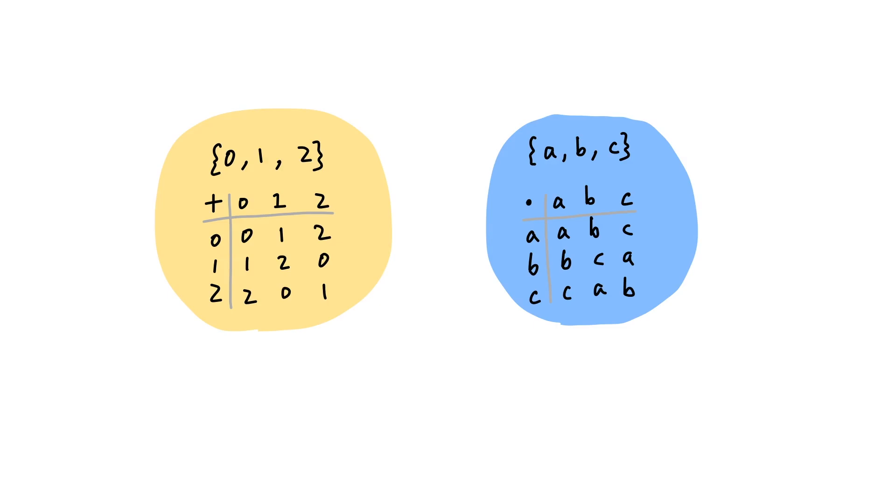Again, we don't need to know about groups or group homomorphisms to see that they're the same. The only difference is in how we name the elements and the operations. So, can we capture this general idea that two things can be the same up to renaming?